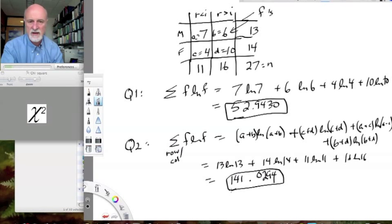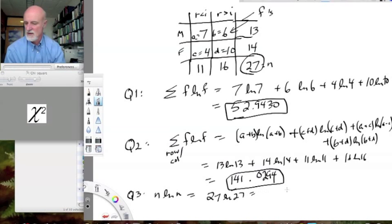The third quantity we're going to need is n log n. So, that's this n, our total n. And, so we have 27 log 27, which is very clearly 88.9876. So, that's our quantity 3.